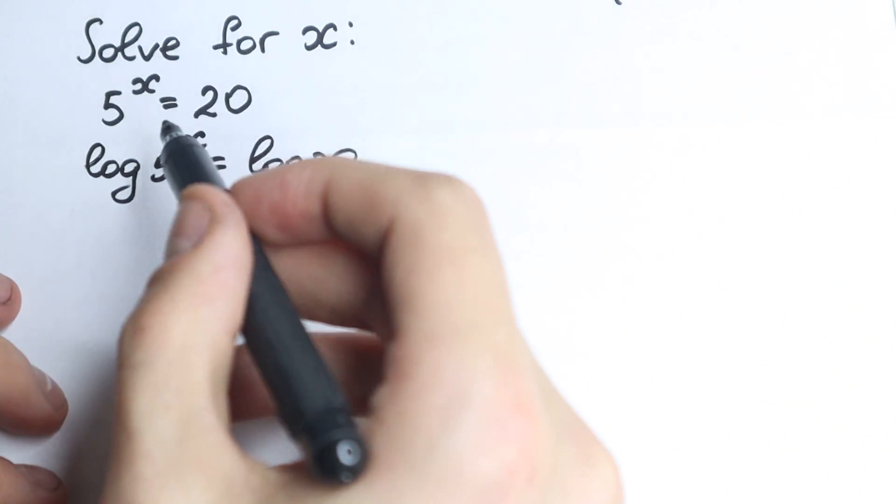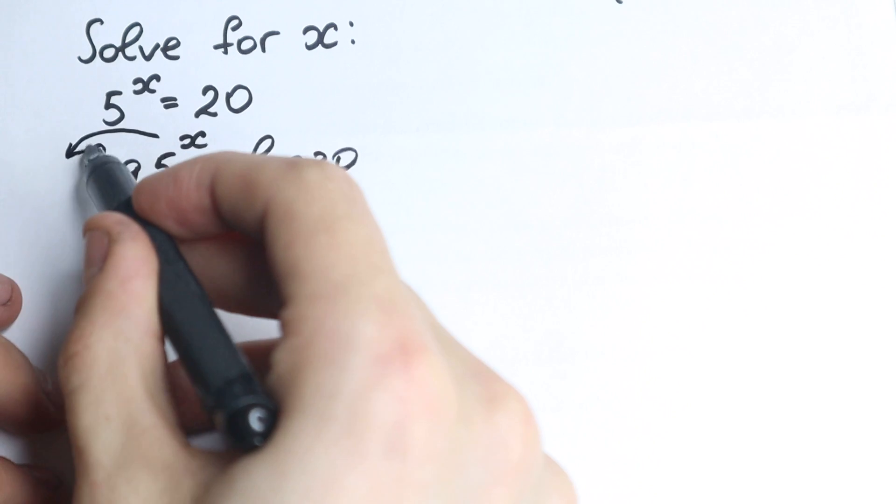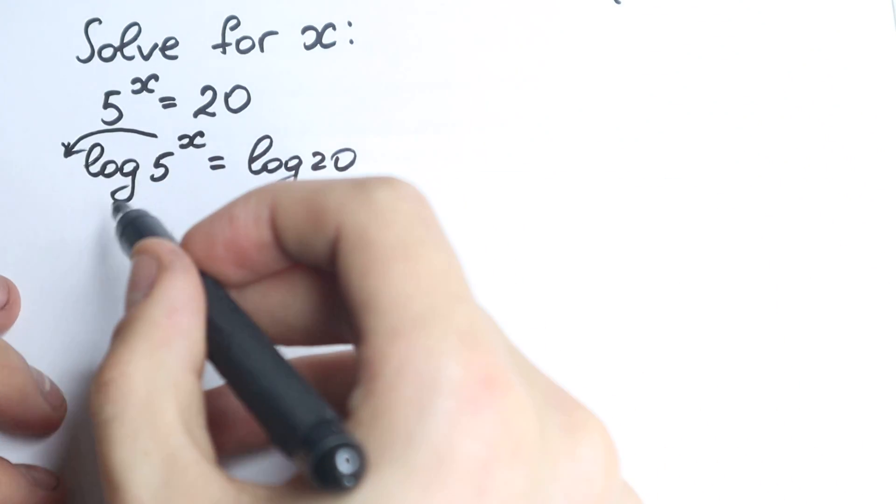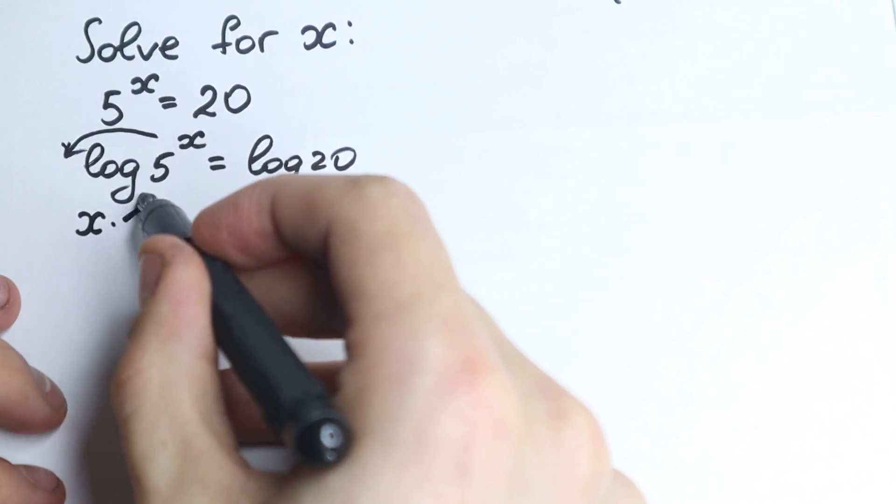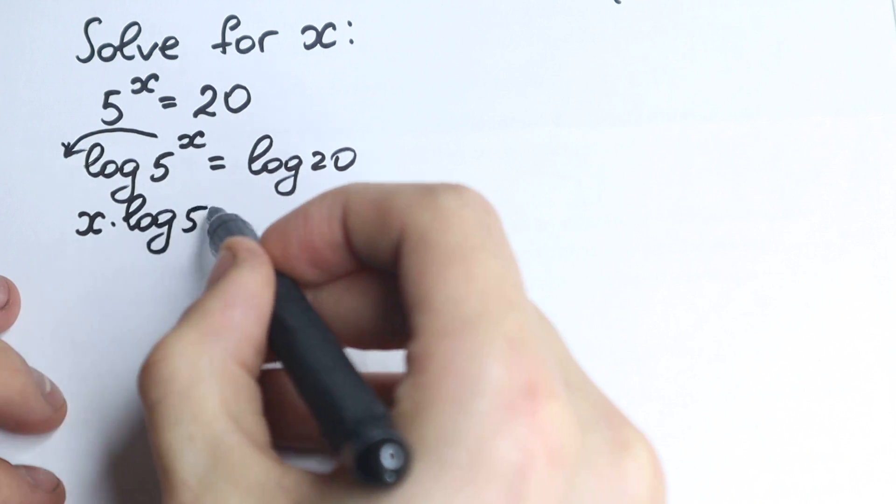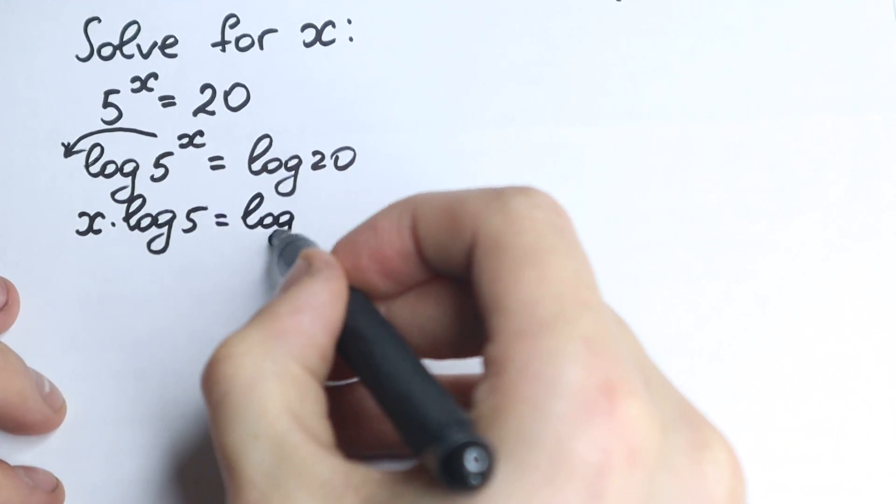What we need to do next? x goes right here. This is the main log property we need to know, and we have x times log 5 equal to log 20.